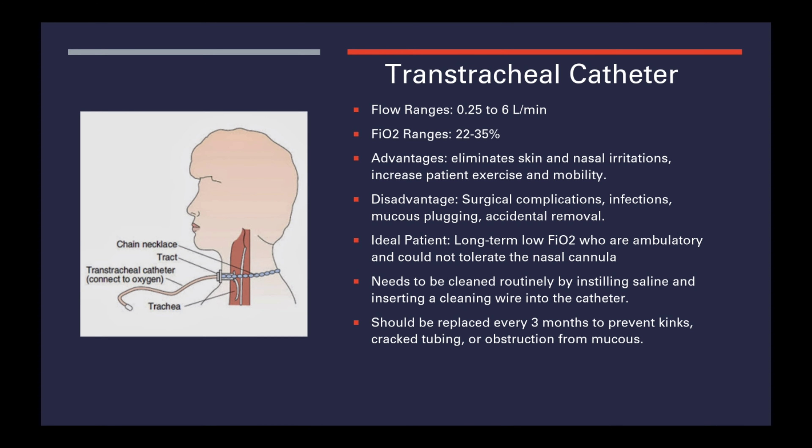Now we're going to talk about the transtracheal catheter. Flow ranges are a quarter of a liter per minute to six liters per minute. FiO2 ranges are 22 to 35 percent. Advantages: it eliminates skin and nasal irritation and increases patient exercise and mobility. Disadvantages: surgical complications, infections, mucus plugging, and accidental removal. The ideal patient is a long-term low FiO2 patient who is ambulatory and could not tolerate the nasal cannula.